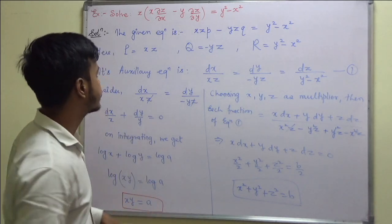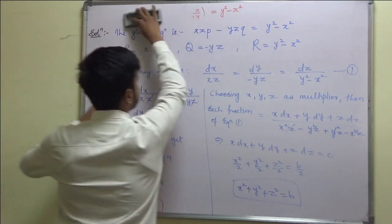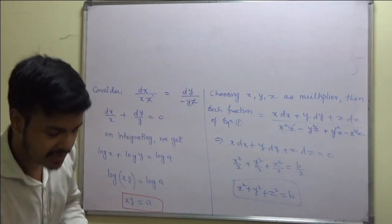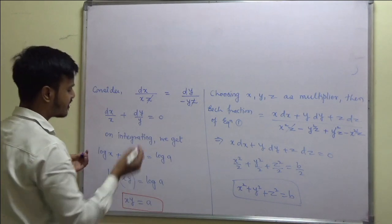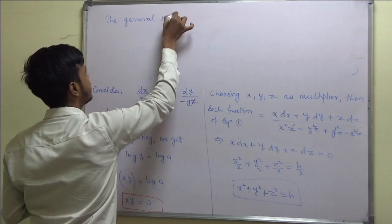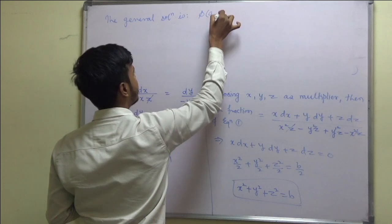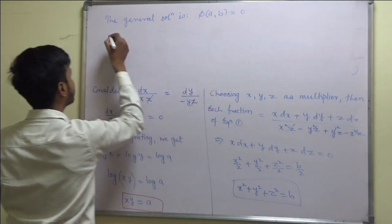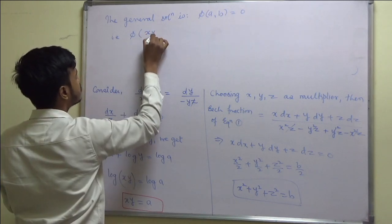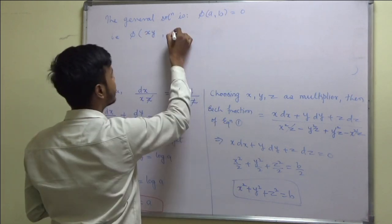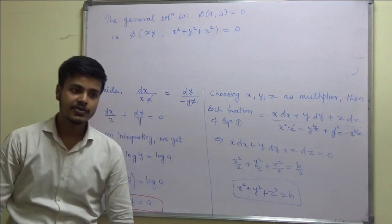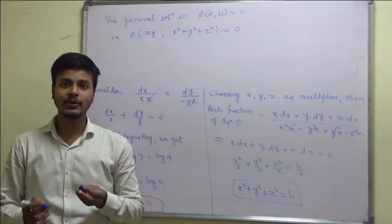After getting the second solution, don't forget to write the final general solution. The general solution is φ(a, b) = 0, where a = xy and b = x² + y² + z². So the general solution is φ(xy, x² + y² + z²) = 0.